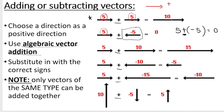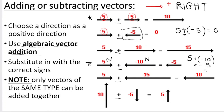Five plus 10, both going to the right, gives 15 to the right. If we have five Newtons to the right and 10 Newtons to the left, we subtract: five plus minus 10, which equals negative five. You can't leave your answer as a negative — you have to interpret it. If to the right is my positive direction and I get a negative answer, it means my answer is five Newtons to the left. You always rewrite your answer with a positive and interpret what the negative means. In this case, the negative means left.